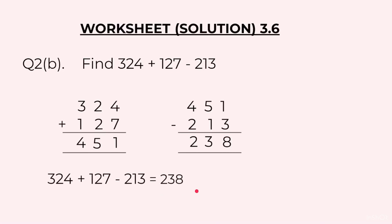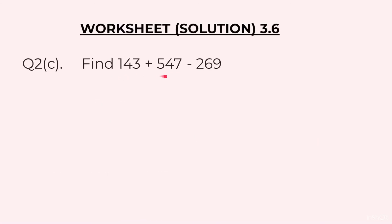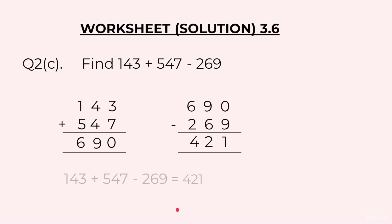C part: 143 plus 547 minus 269. We will start with the first two numbers, we have 690. From that we will subtract 269. The final answer will become 421. This brings us to the end of the worksheet.